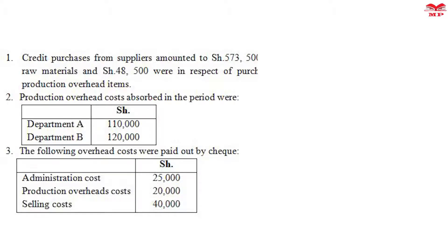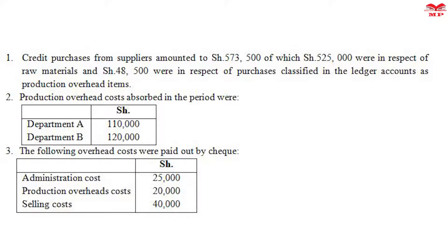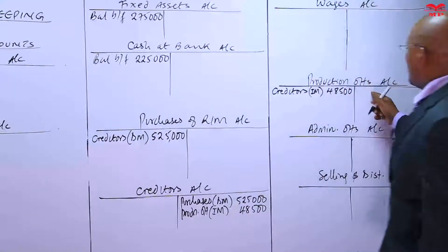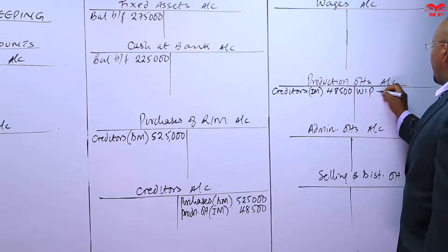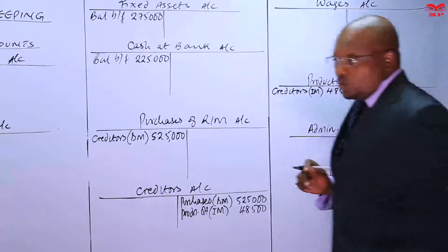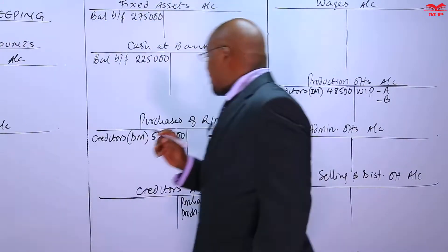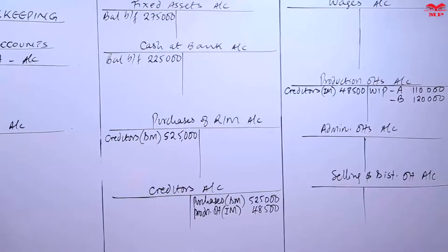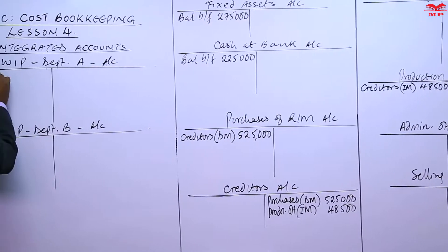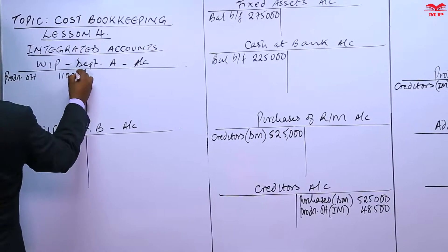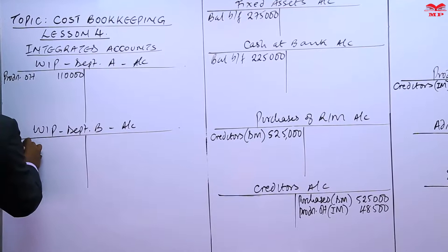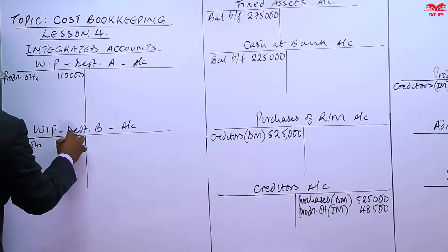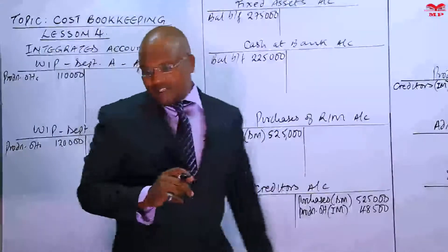We have production overhead costs absorbed in the period — Department A and Department B. We are absorbing 110,000 and 120,000 respectively. So we record: WIP Department A debited with 110,000 from production overheads, and WIP Department B debited with 120,000 from production overheads. That is the double entry for transaction two.